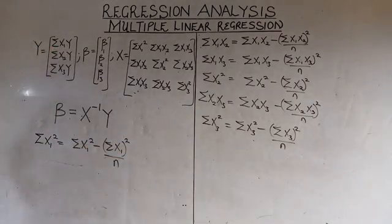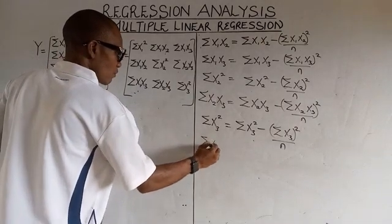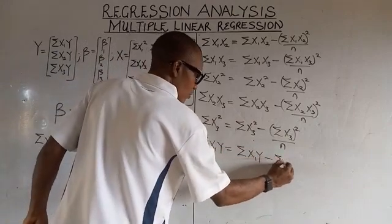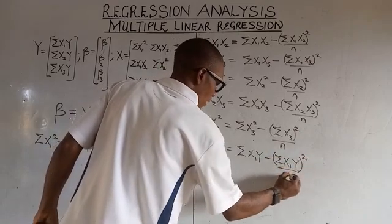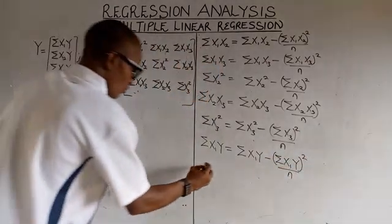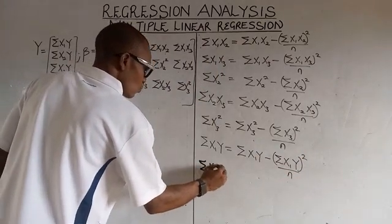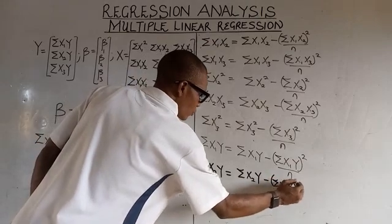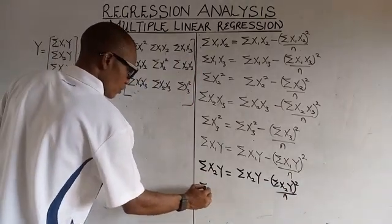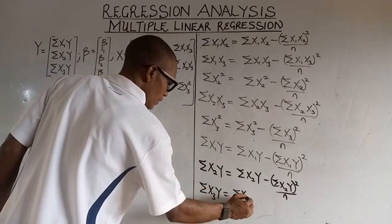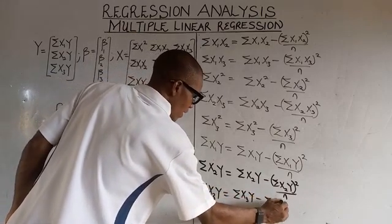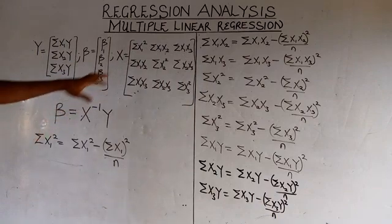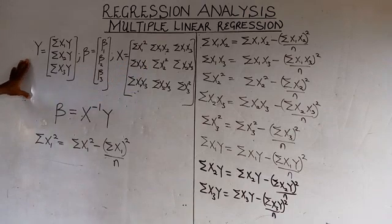The same approach applies for the Y vector elements. Summation of x1·y is calculated as summation of x1·y minus (summation of x1)(summation of y) over n. Similarly, summation of x2·y and summation of x3·y are calculated as summation of x_i·y minus (summation of x_i)(summation of y) over n. This is how we calculate and solve for the values in multiple linear regression.